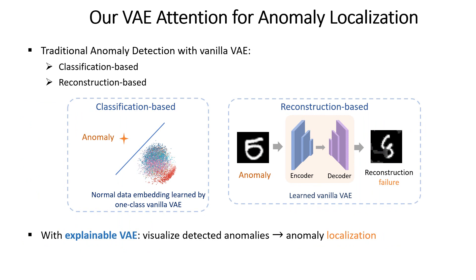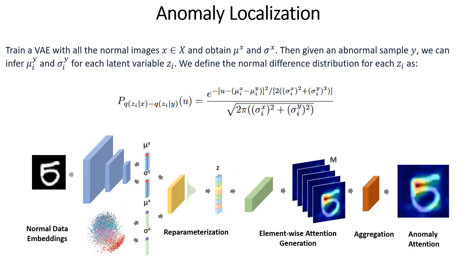In the following slides, we apply our VAE attentions to anomaly localization tasks. Traditionally, people use vanilla VAE to detect anomalies based on either latent space distributions or reconstructed output images. In our case, our model can localize anomalies where the input does not follow the standard Gaussian, and we use this difference to compute attention maps.